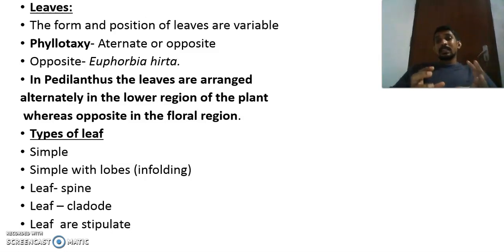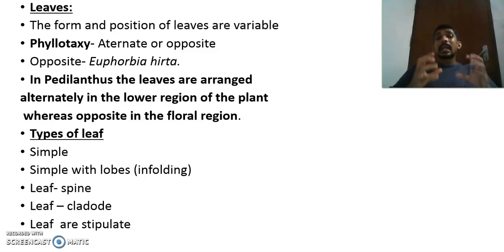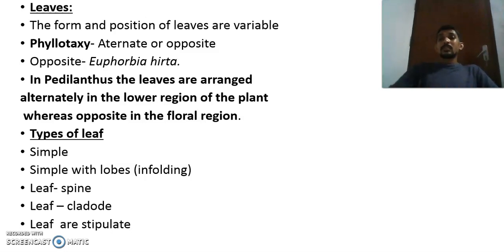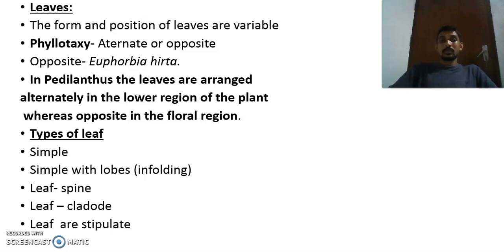The phyllotaxy — arrangement of leaves on the stem — is either alternate or opposite. In Euphorbia hirta the phyllotaxy is opposite. In Pedilanthus, in the lower part of the stem the leaves show alternate phyllotaxy, whereas in the floral region of the stem the leaves show opposite phyllotaxy.